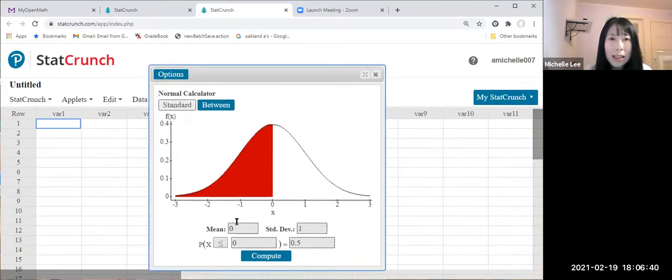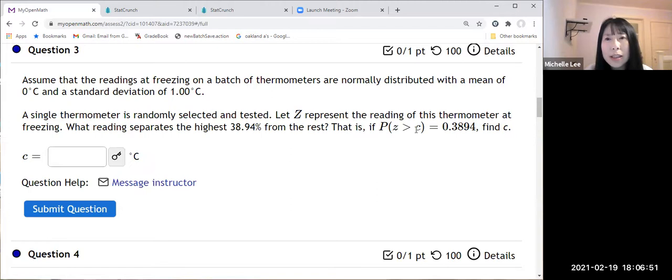Alright, so mean is zero and standard deviation is one. Now, let me read one more time. The Z is greater than C, then we're gonna find what is the C.